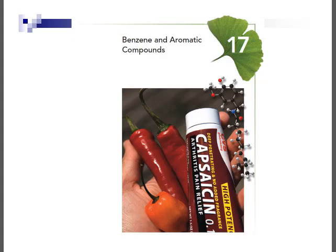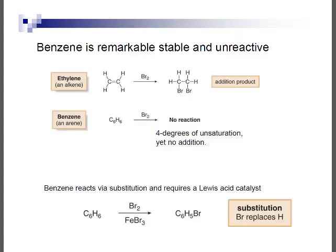Welcome to the next chapter on benzene and aromatic compounds. This is chapter 17 in some editions, chapter 15 in the newest edition, but the information is the same. Benzene is a remarkably stable and unreactive compound. In chapter 11, we talked about electrophilic addition reactions — alkenes will react with bromine, go through a bromonium ion intermediate, and give you the 1,2-dibromo addition product.